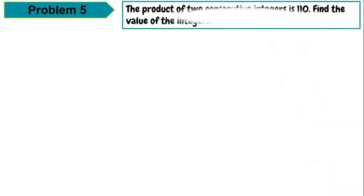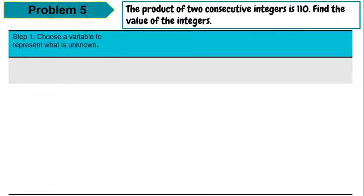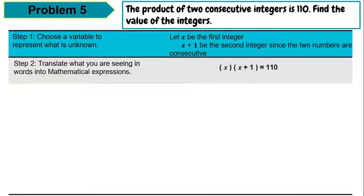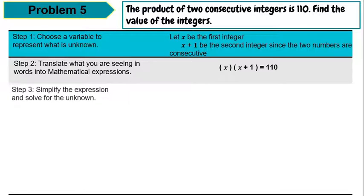Now let's have problem 5. The product of two consecutive integers is 110. Find the value of the integers. Let x be the first integer and x plus 1 be the second integer, since the two numbers are consecutive. Translating: x times the quantity x plus 1 is equal to 110.